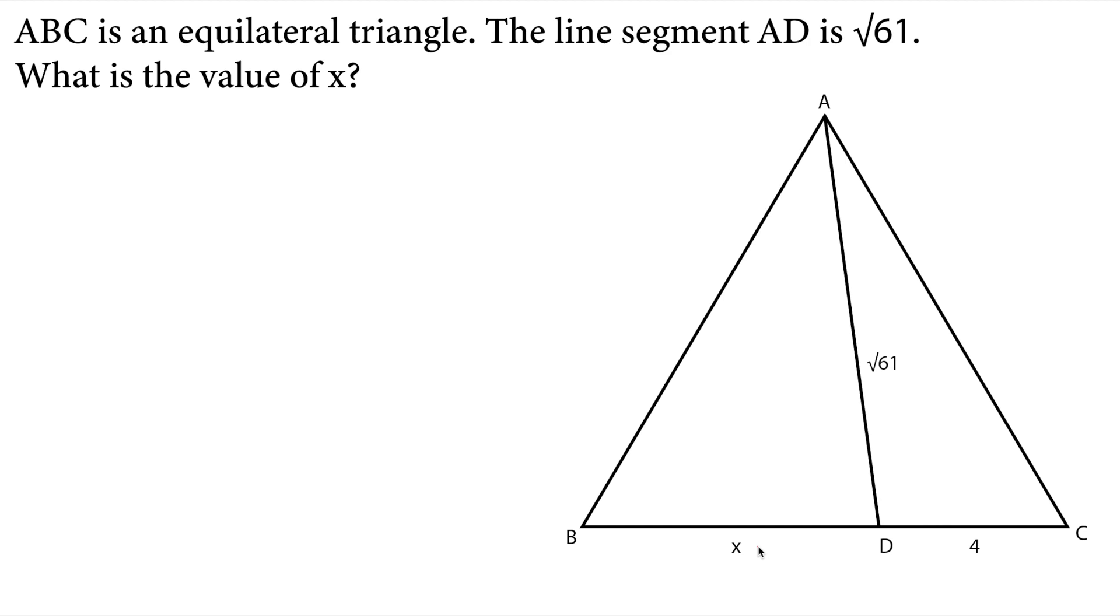Let's read the question. ABC is an equilateral triangle. The line segment AD is square root of 61. What is the value of x?